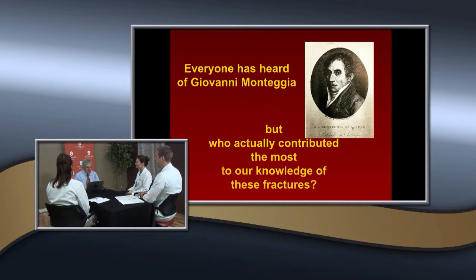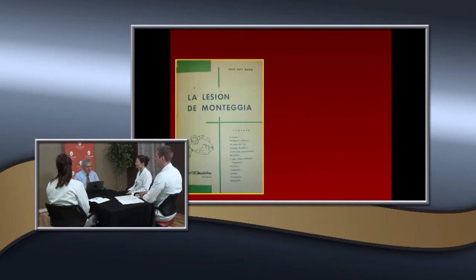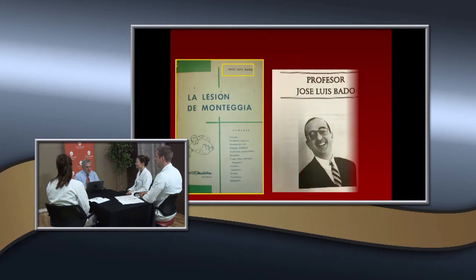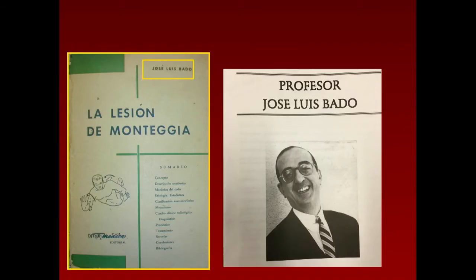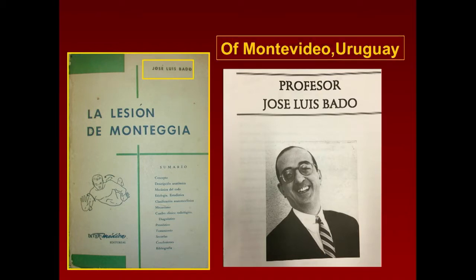It was Jose Luis Bado from Montevideo, Uruguay who made the major contribution. He spent a lot of time and wrote an entire book on Monteggia lesions, which he popularized. He wrote it in Spanish, and then Ponsetti saw it and was able to get it into English — about 10 years later it entered the English literature.